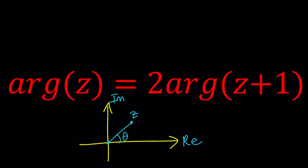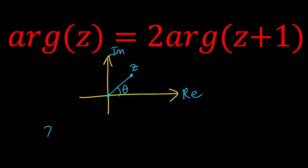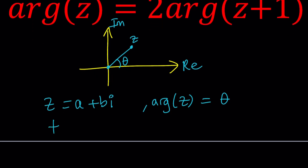So this is a problem with arguments. In order to solve it, I'm going to set z equal to A plus BI — that's also the name of this channel. Now if z equals A plus BI, I'll define the argument of z as theta. Then tangent theta, using the right triangle with this in the first quadrant, is going to be B over A — opposite over adjacent.